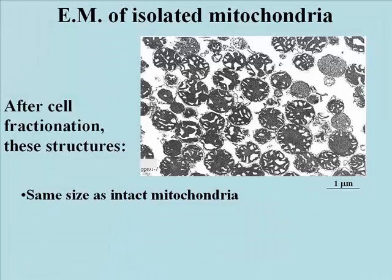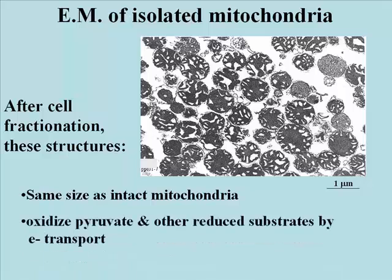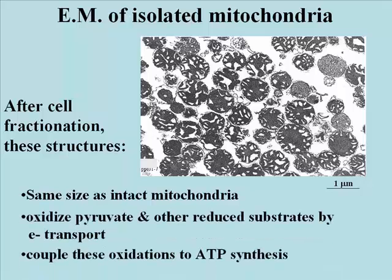Here are some experimental tests. You could check to see if the isolated structures would oxidize pyruvate or other substrates. What other substrates might you test to see if they're oxidized by this cell fraction? You could also check to see if the isolate would convert ADP and inorganic phosphate into ATP, another function of mitochondria.